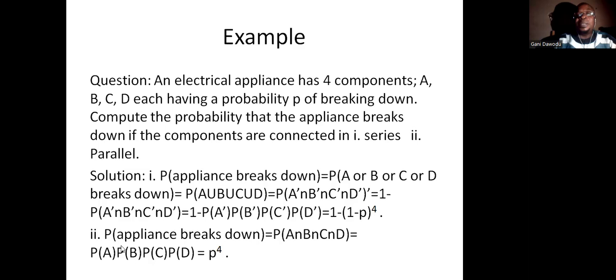But for the case that they are arranged in parallel, for the appliance to break down, A will have to break down and B will have to break down and C will have to break down. So it becomes probability of A times probability of B times probability of C times probability of D, and each of them is P, so it's P to the power 4.